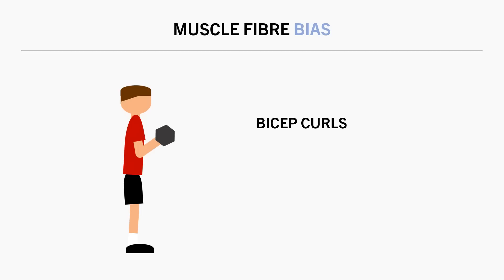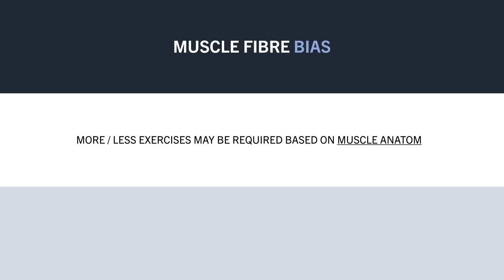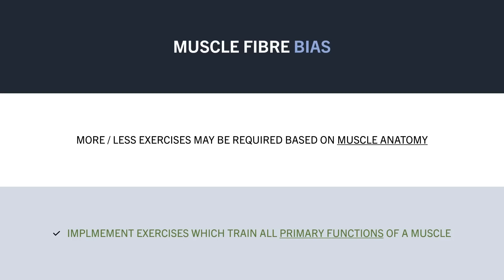However, this is less applicable to muscles with fewer functions. For example, we can train the biceps using any form of biceps curl, but we can't really bias different fibres because all fibres pretty much have the same function — so all fibres will be trained using basically any curl variation. Depending on the particular muscle group, we may want to include more or less exercises, and we probably want to include movements which train all of the primary movement patterns that the muscle group produces, so that all fibres are maximally stimulated throughout the week.